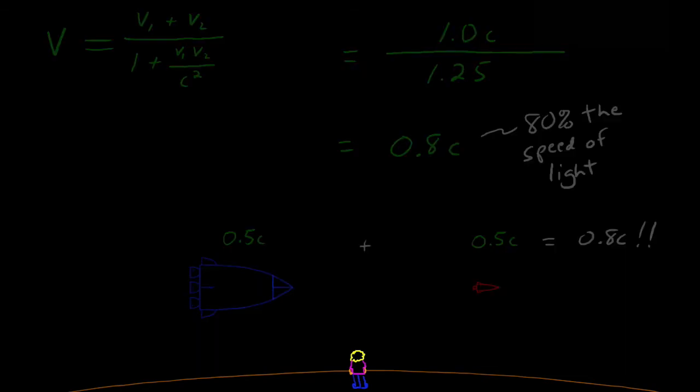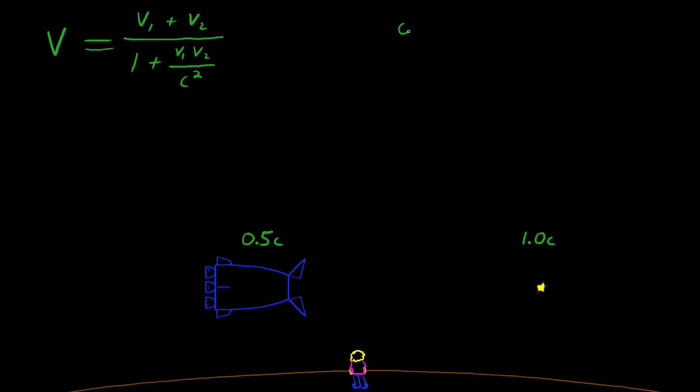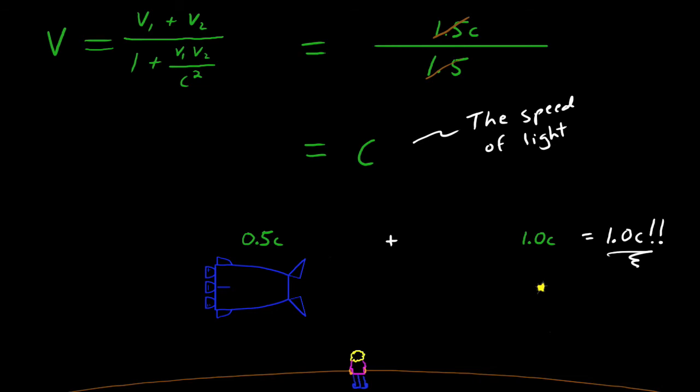What if instead of a missile, the passing ship fires a beam of light straight ahead? How fast do you see that beam of light moving ahead of the rocket? That would be V equals 0.5C plus C divided by 1 plus 0.5C squared divided by C squared equals 1.5C divided by 1.5. That's C. Notice that the astronaut sees the light beam move away from the ship at C. But so does the person watching the light beam from the planet, even though the astronaut is moving forward when he turns on the beam of light. Both people measure the speed of light to be the same, regardless of their relative motions.